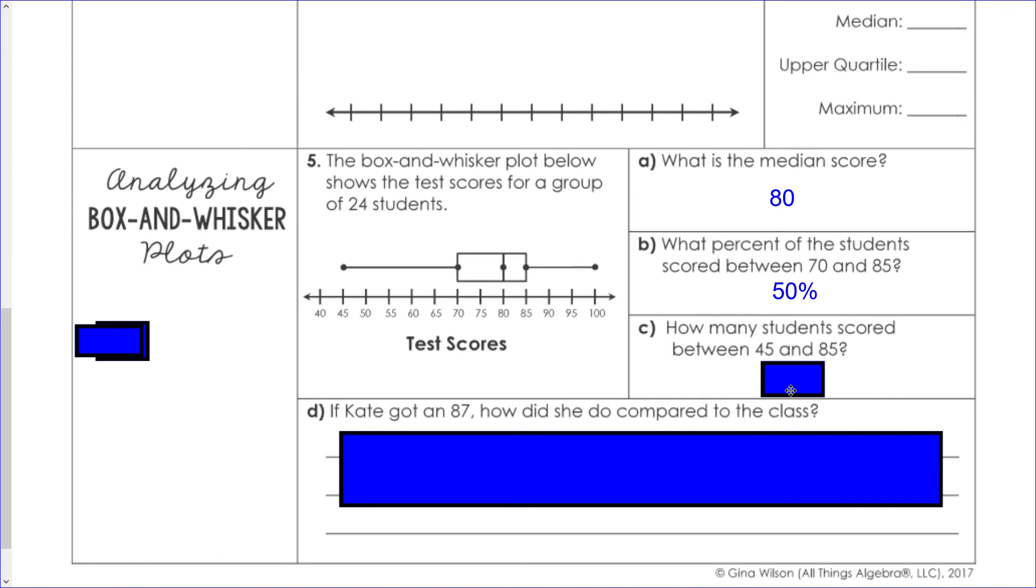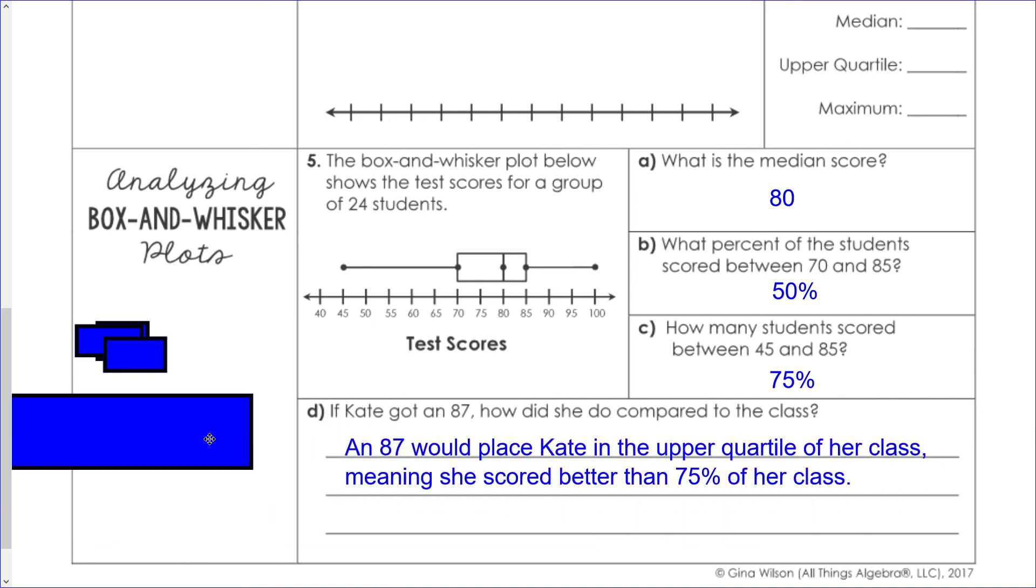How many students scored between 45 and 85? That's between the minimum number and our upper quartile, so that's 25, 25, 25, and 25 to get a total of 75 percent. If Kate got an 87, that's above the upper quartile, so Kate is in the top quartile of the class, meaning she scored better than 75 percent of her class.